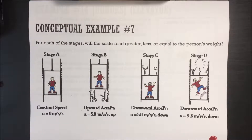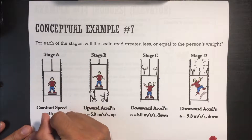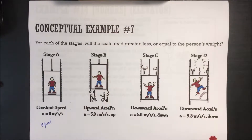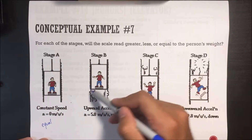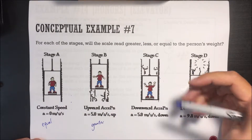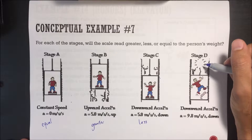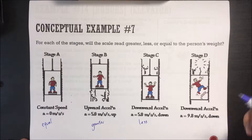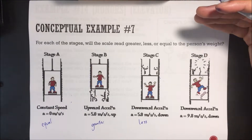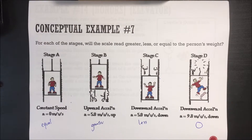Conceptual example: for each of the stages, will the scale read greater, less, or equal to the person's weight? When going at constant speed, that means zero acceleration, so the scale reads equal to the weight. If accelerating upward, there's more pressure, so the normal force is greater. Downward acceleration means less pressure, so the scale reads less. If the cable snaps and the elevator accelerates downward at 9.8 or 10 m/s², you're in free fall with no contact, so the scale reads zero.